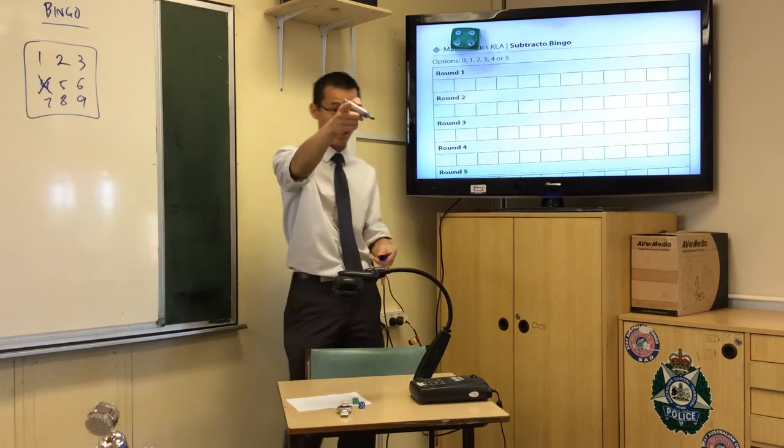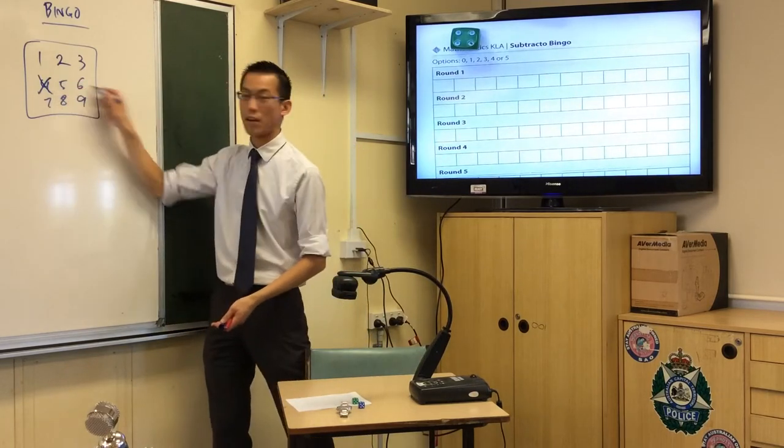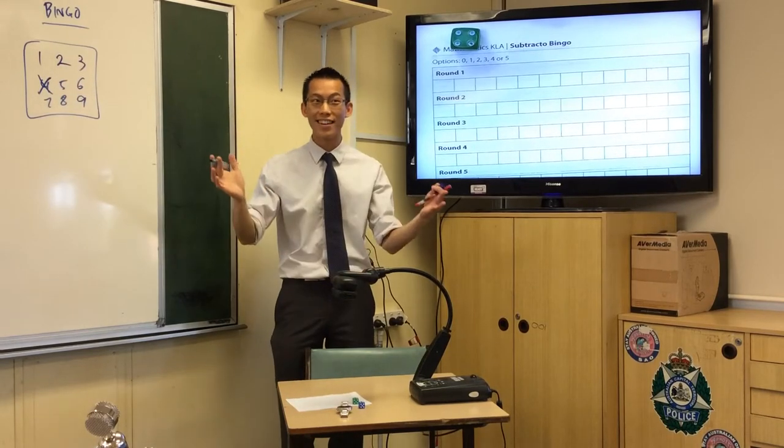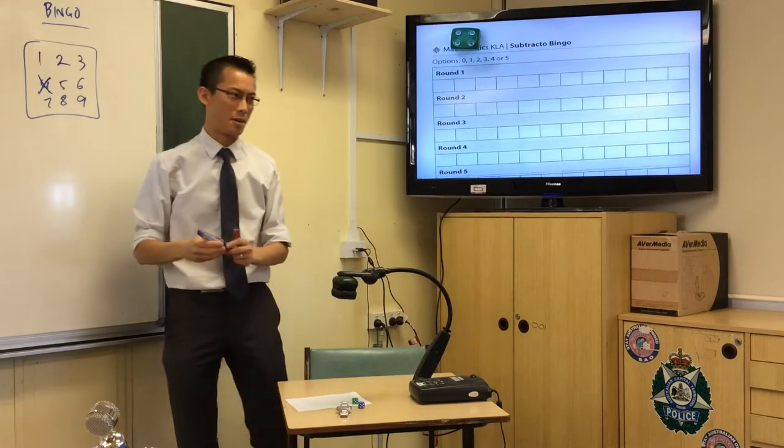And we keep playing and then as Tom said, usually it's like, can you get three in a row or three in a column or a diagonal or whatever? And then you call out bingo, hooray! And then you've won, right?